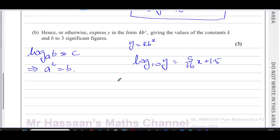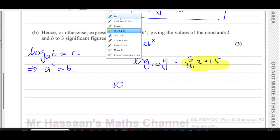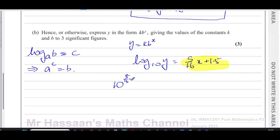So the base is 10. And the power is everything on this side. All of this is the power. So the power is going to be 5 over 16 x plus 1.5. That's the power, and that's equal to y. So we can say y is equal to 10 to the power of 5 over 16 x plus 1.5.